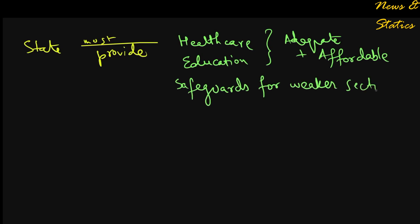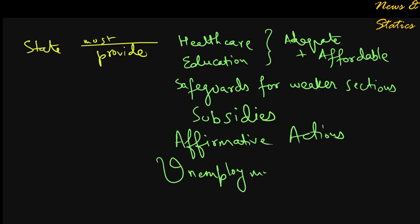For that, the state must provide adequate affordable healthcare, education, safeguards for minorities and other disadvantaged sections of people, subsidies, affirmative actions, unemployment compensations, labor laws and so on and so forth.